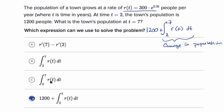Looking at the other choices: choice B is just the change in population — how much the population increases from T equals two to T equals seven — not the actual population. Choice C would be the change in population from time zero to time seven, but that would only give the town's population if they had no people at time zero, which we can't assume — maybe the town was settled by 10 people, or 1,000, or whatever.